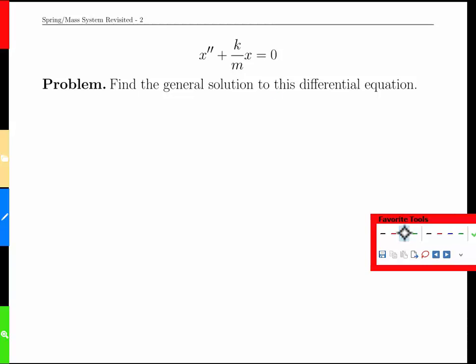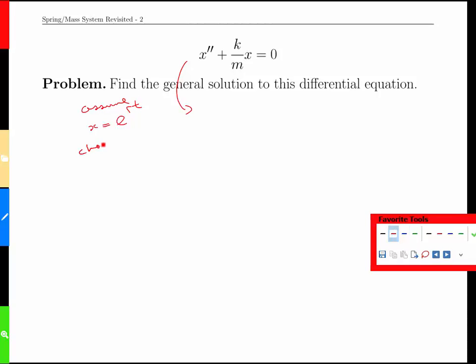Find the general solution to this differential equation. We know the first step is going to be our assumption. We're going to assume x is our unknown function here and t is the unknown variable, so we're going to assume that our solution looks something like e to the rt.